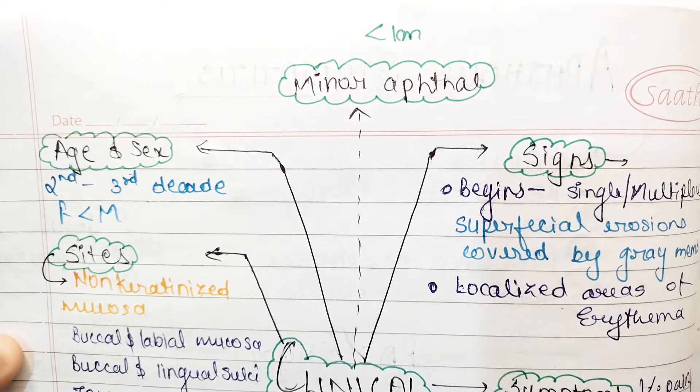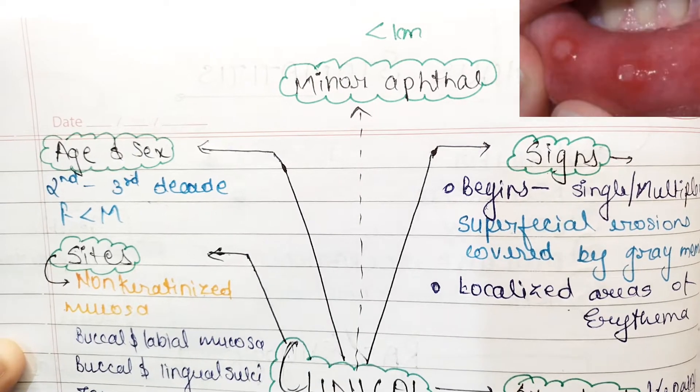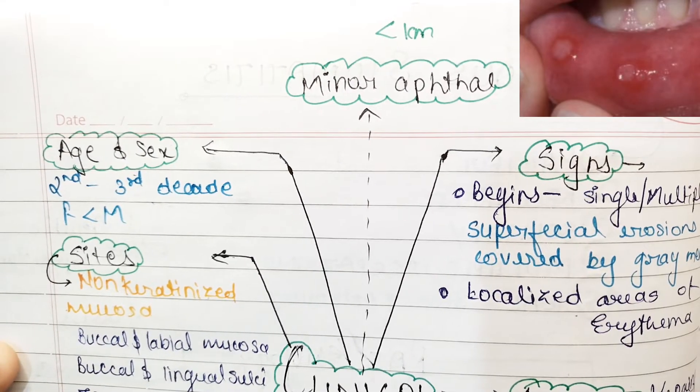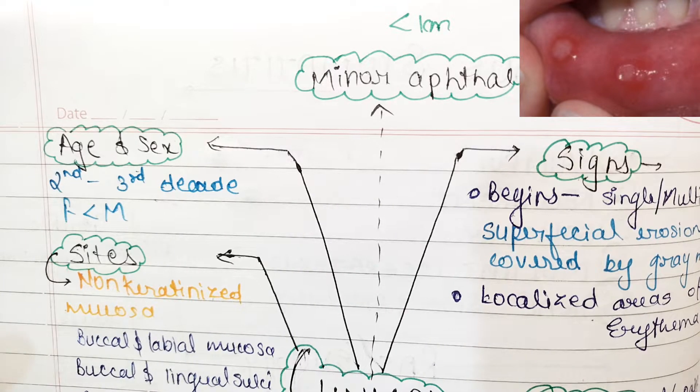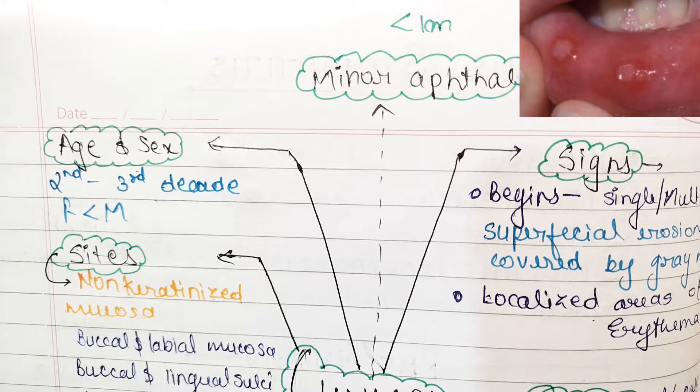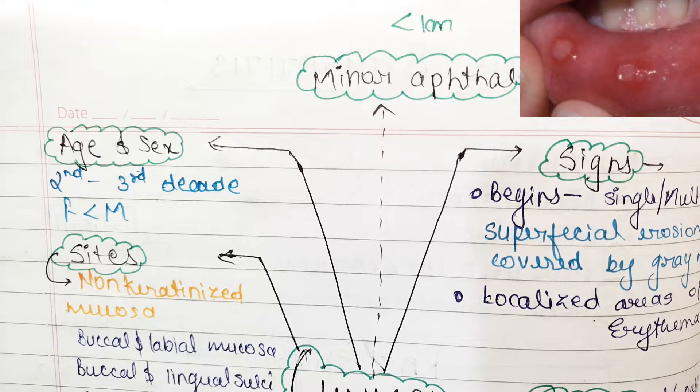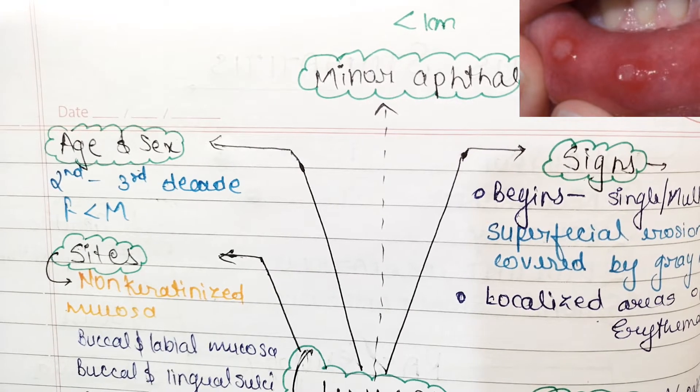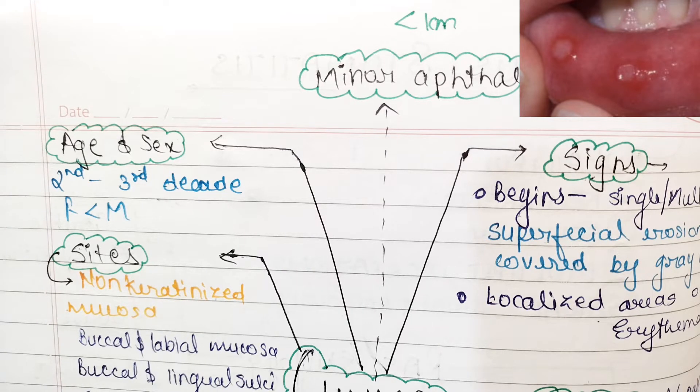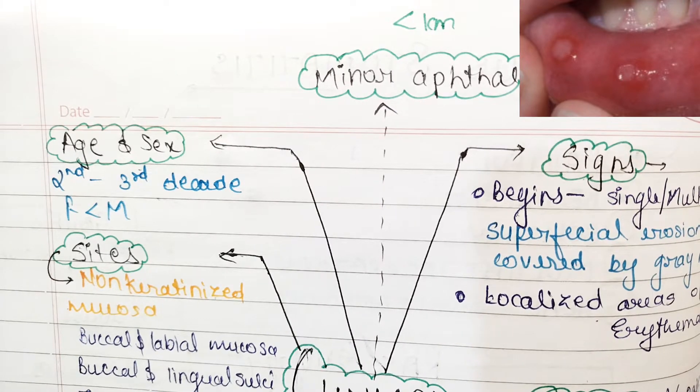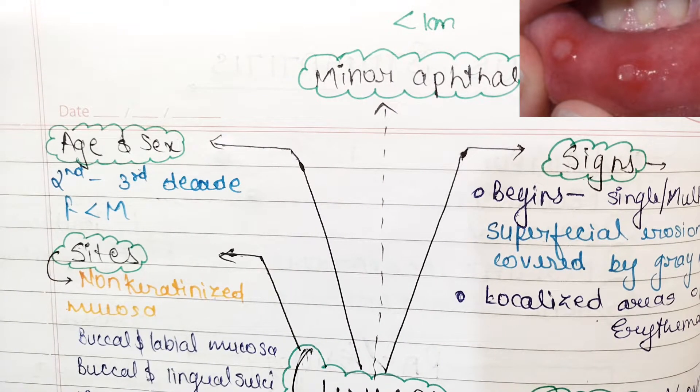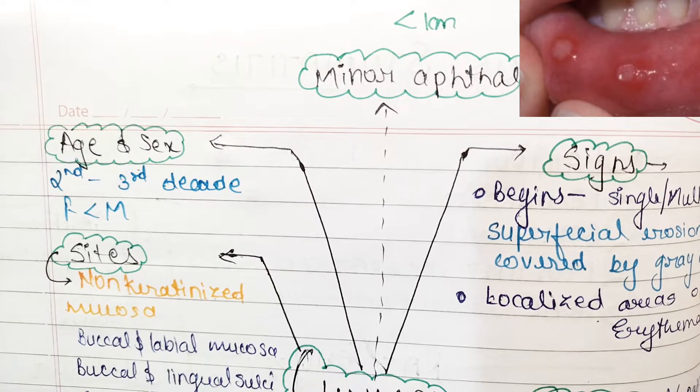In our previous video we discussed etiology, introduction and classification. We have seen three major types of aphthous stomatitis: minor aphthae, major aphthae and herpetiform ulcer. Minor aphthae are oval in shape, less than 1 cm and heal without leaving any scars. Some canker sores are seen in minor aphthae, which we discussed in the last video.